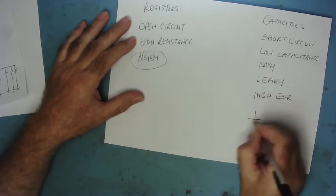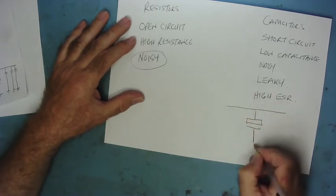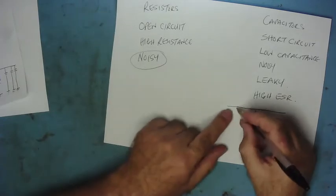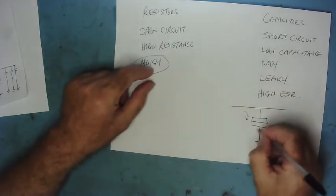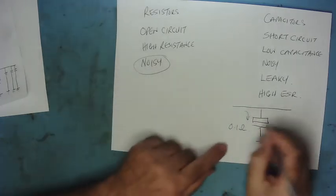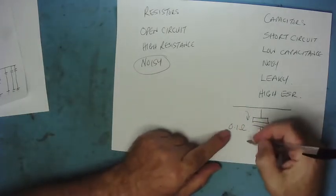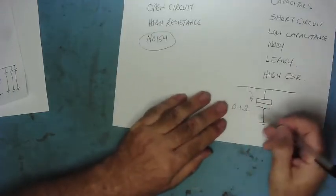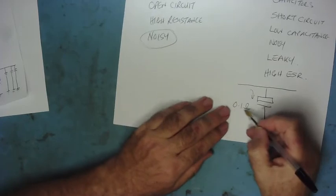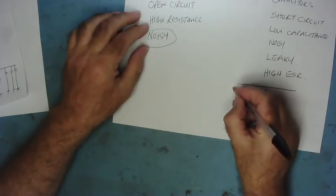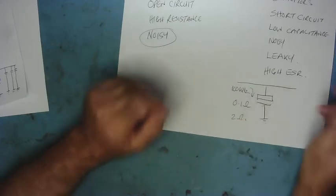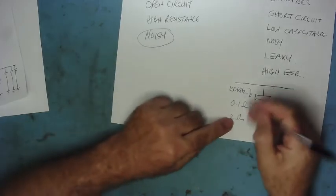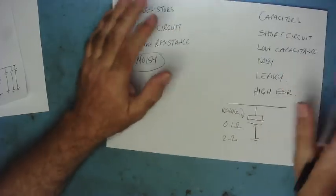High ESR means the capacitor still passes AC to ground, but whereas it was designed so that at a certain frequency it looks like 0.1 ohms to ground — it always has some impedance which varies with frequency — it's supposed to act like 0.1 ohms at, say, 100 kilohertz. What's happened is this has increased. It still passes 100 kilohertz, but this is now maybe 2 ohms. So it can no longer effectively pass the AC, and that's important in some circuits — especially power supply circuits.